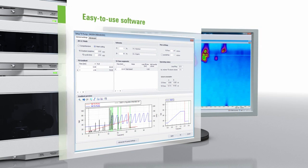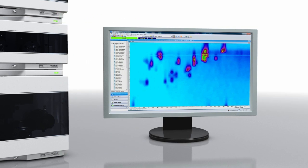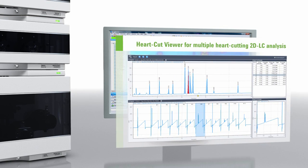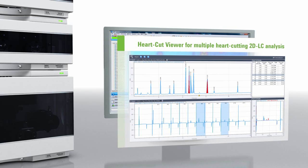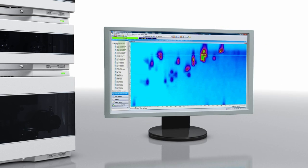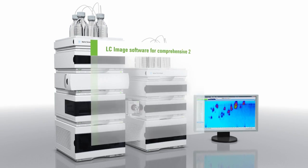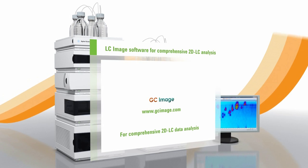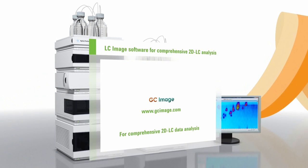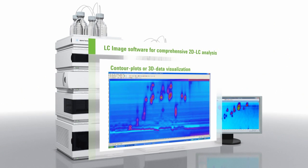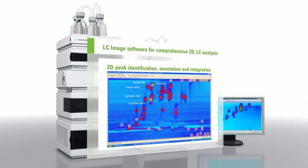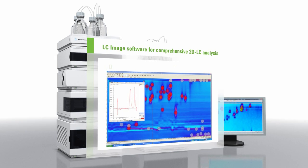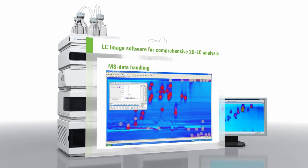To analyze data from multiple heart cutting 2D LC, the new interactive Heart Cut Viewer provides for a fast and easy review of your data and offers a straightforward reporting function. To visualize the highly complex information generated by comprehensive 2D LC, the LC Image software from Agilent partner GC Image offers all required data analysis features you are used to using in one-dimensional chromatography.